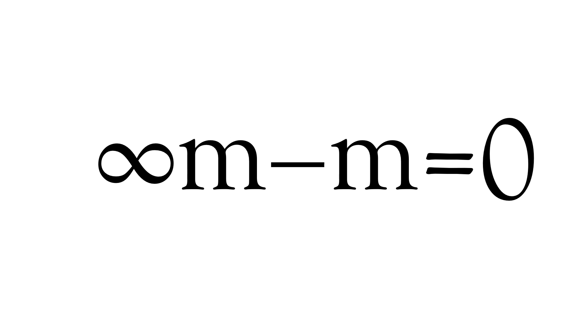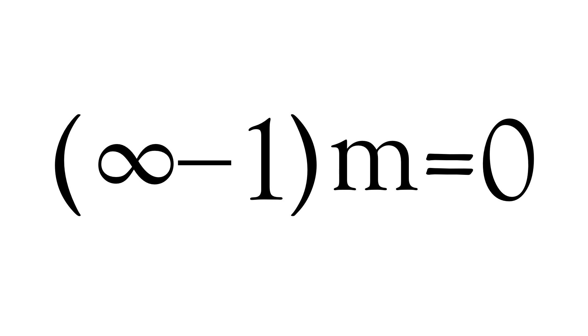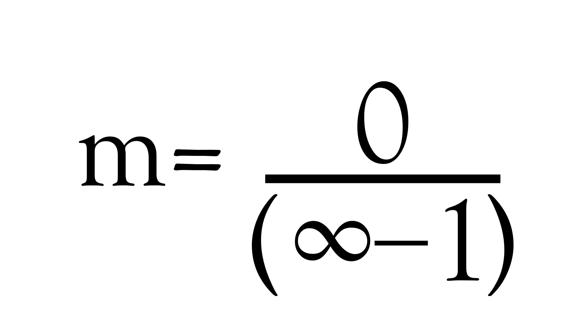First, we subtract m from both sides of the equation. Then, we factorise m. Finally, we divide through by infinity minus one.